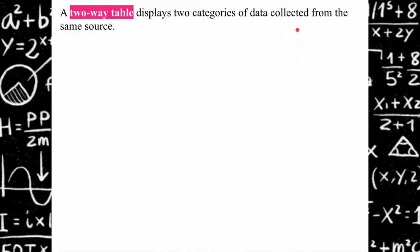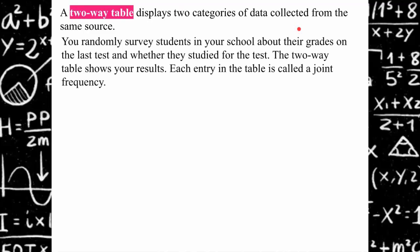Let's go over a two-way table that displays two categories of data collected from the same source. We randomly surveyed students about their grades on the last test and whether they studied. So: did you study or did you not study, and did you pass or did you fail? They had to answer two questions.